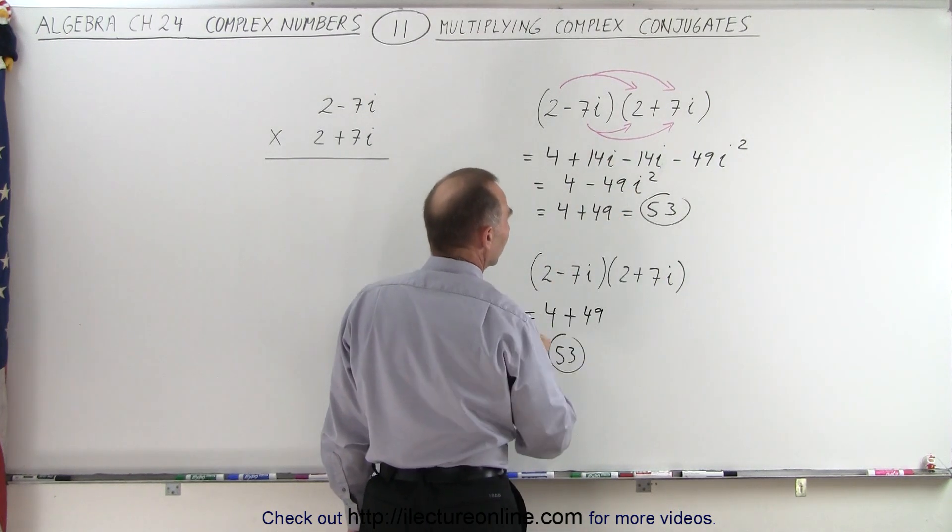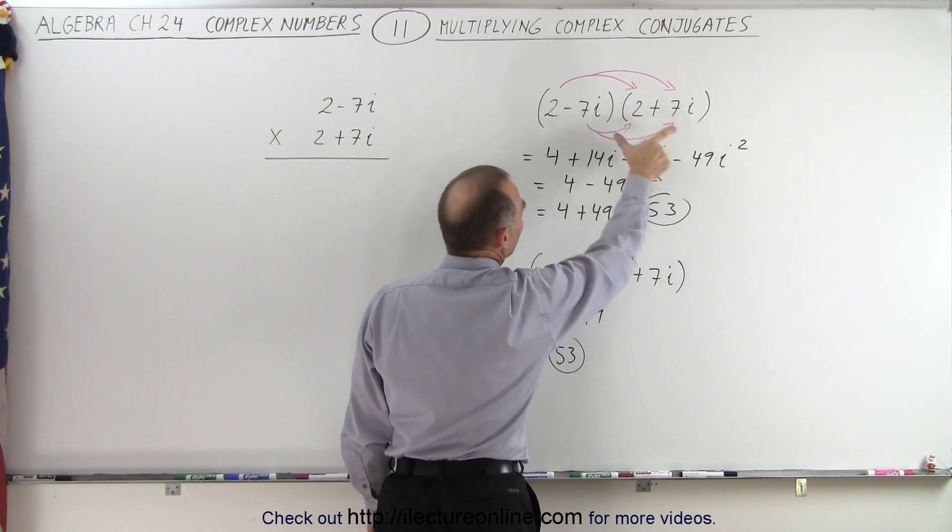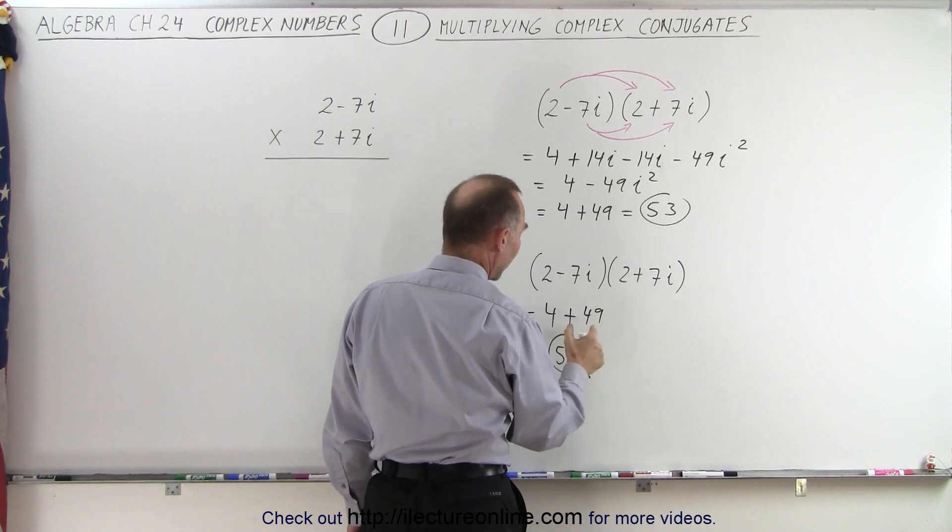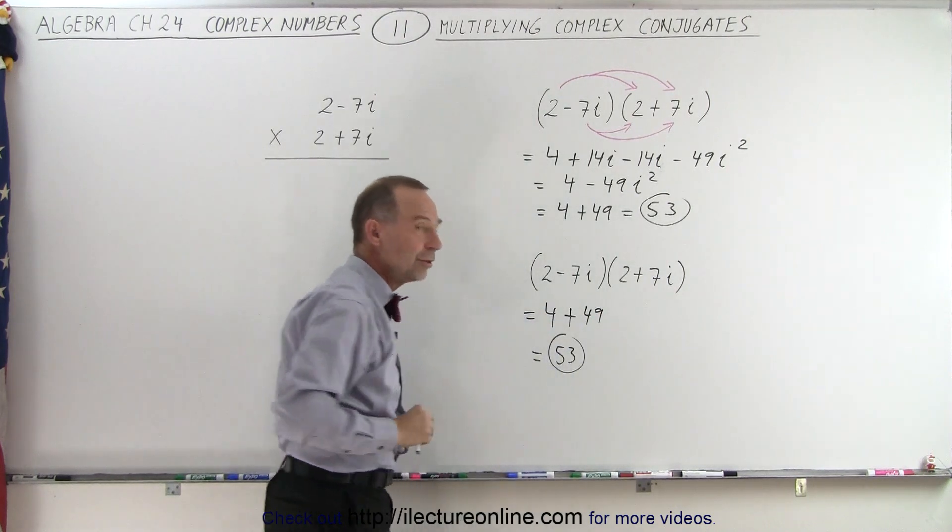So once you realize that the middle term disappears, and the last term simply becomes the product of those two numbers, which becomes a positive 49 always, add the two together, you get the result.